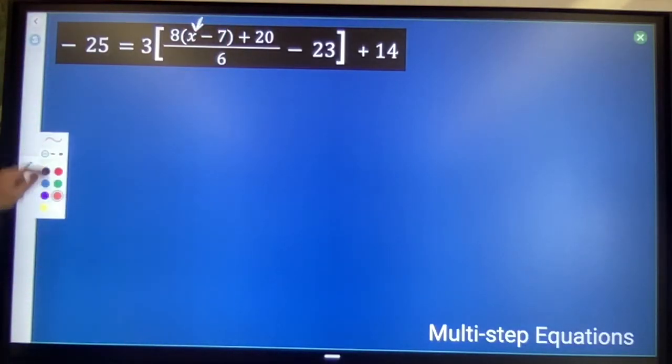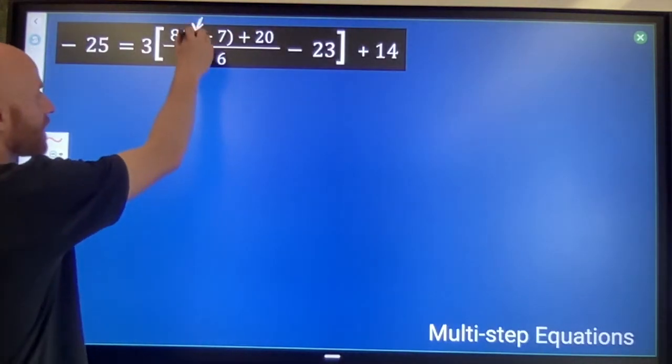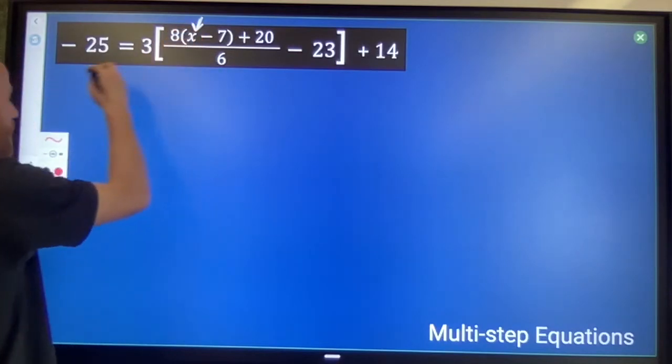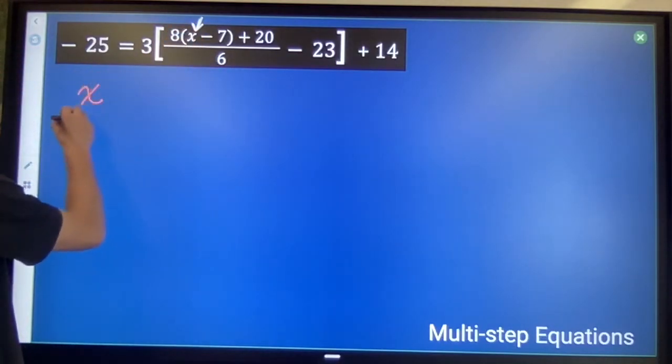Tell the story of the variable. If I start there, following order of operations, what happens to my variable? Parentheses first. Inside this parentheses, the first thing that happens to my variable is minus 7.